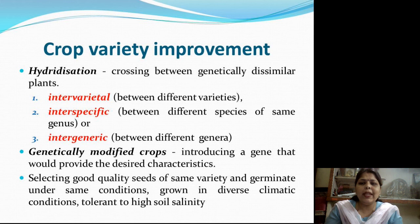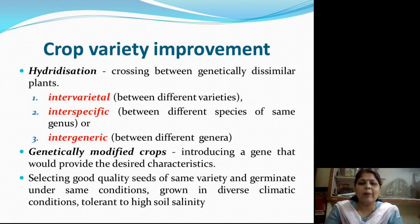The best selected crops follow the process of hybridization. Hybridization is crossing between genetically dissimilar plants. It can be intervarietal, that is between different varieties; interspecific, that is between different species of the same genus; or intergeneric, that is between different genera. Best selected crops are hybridized so that we get the best crops after hybridization.